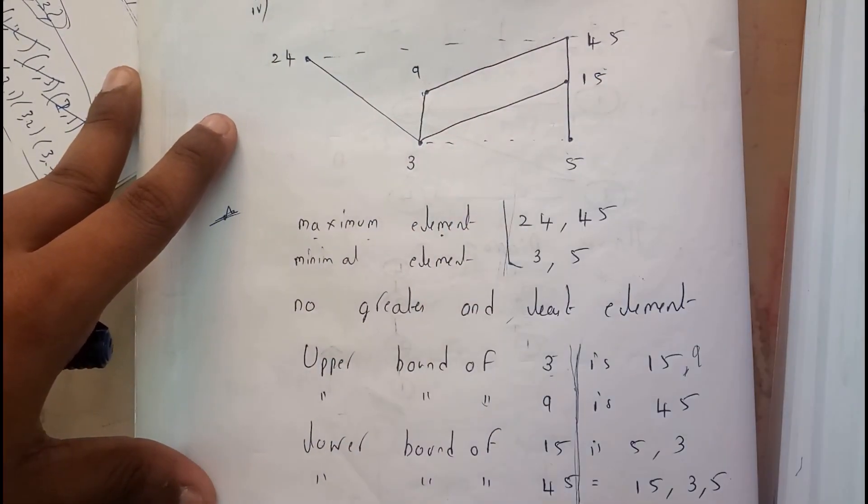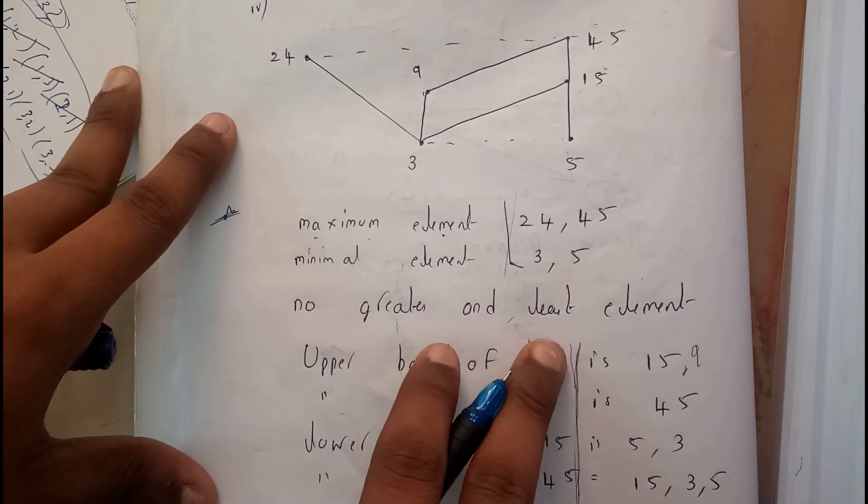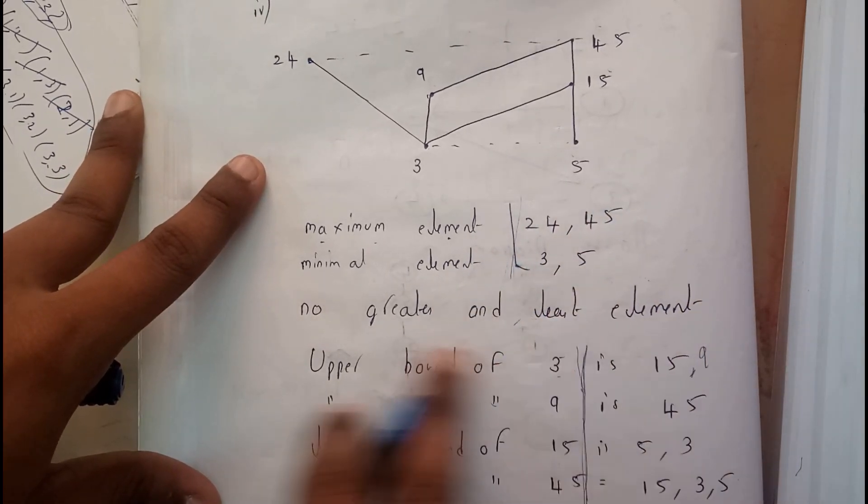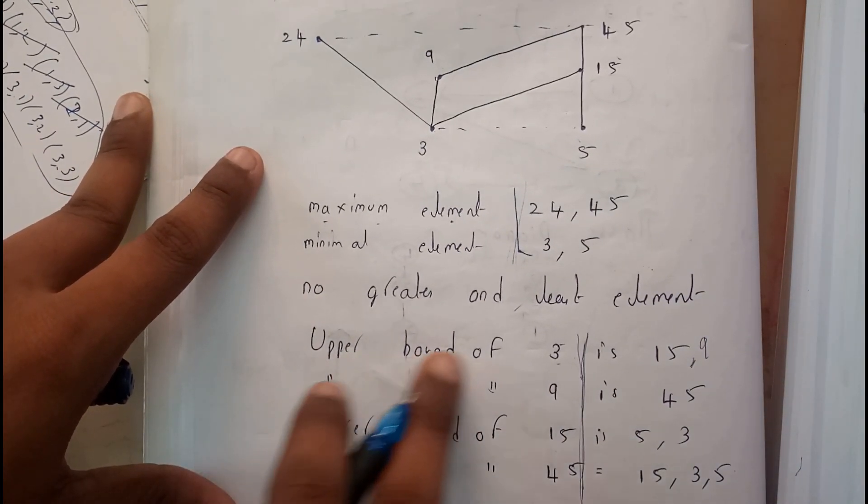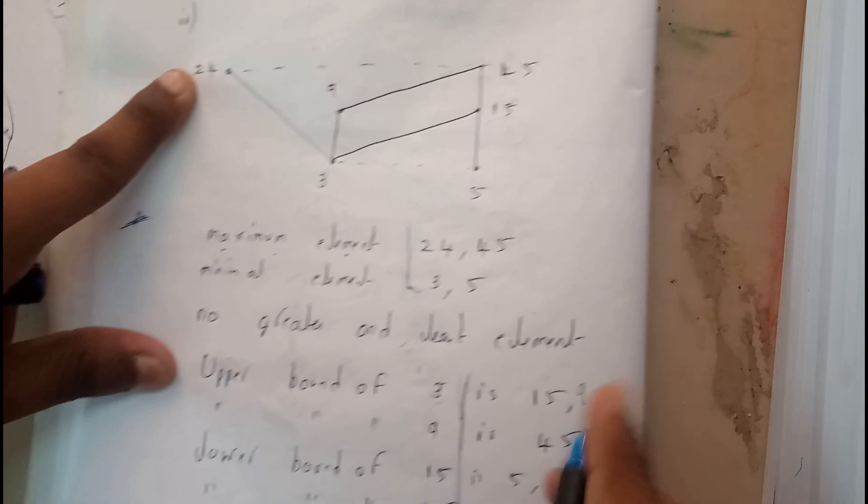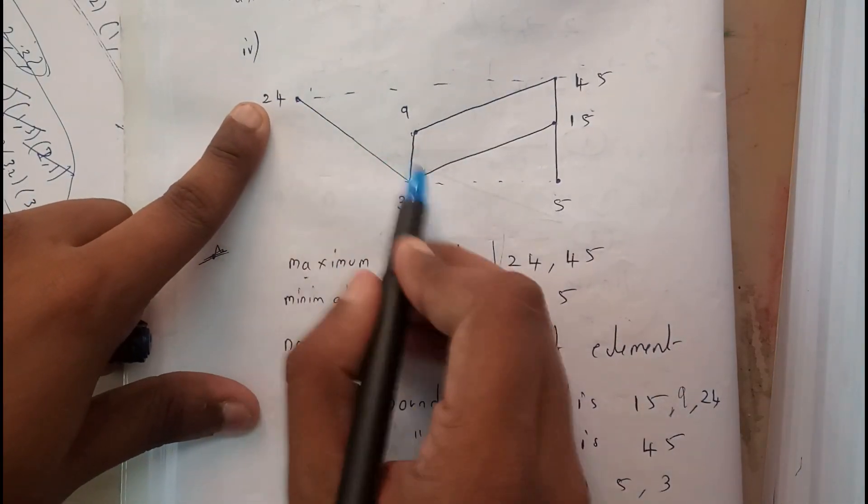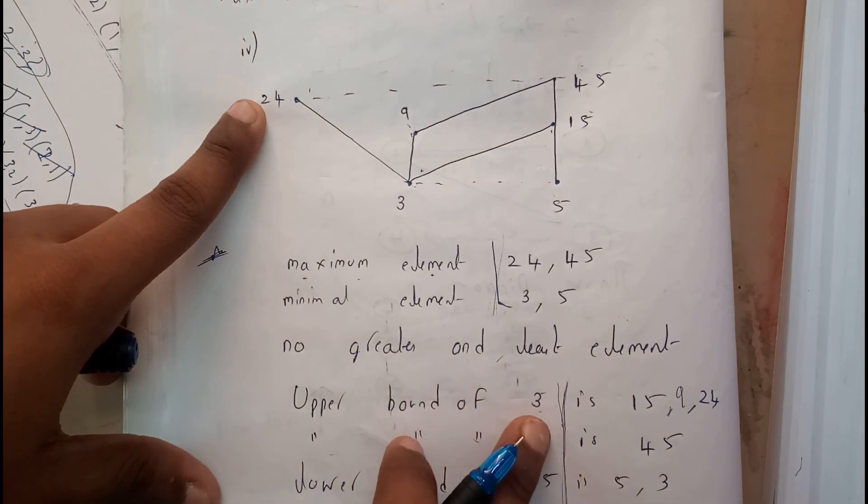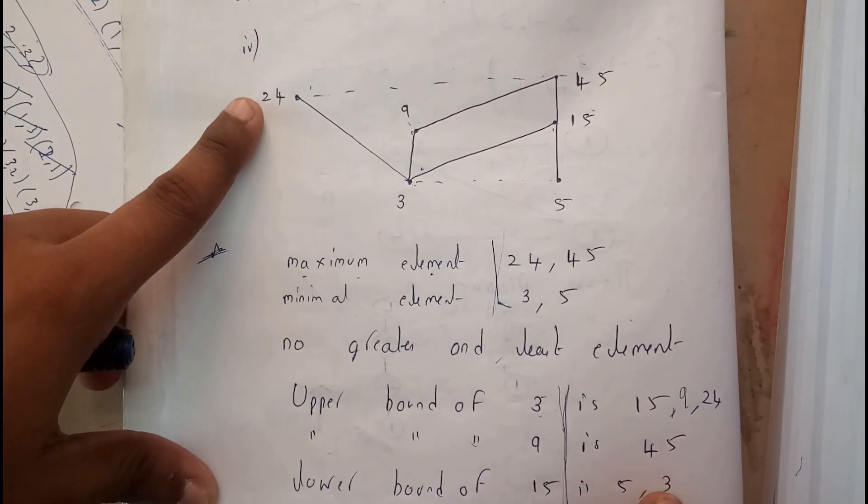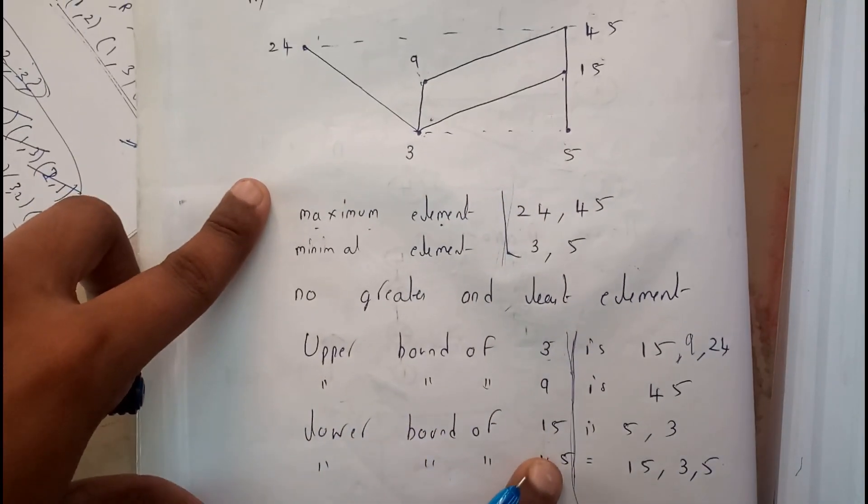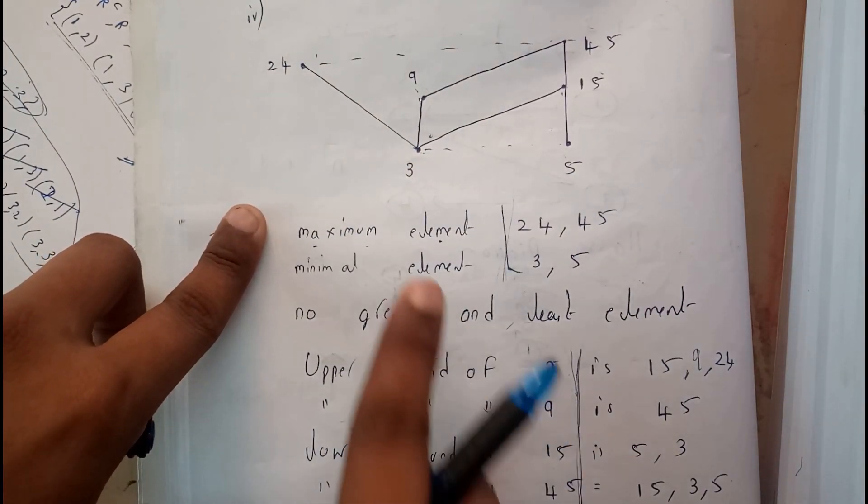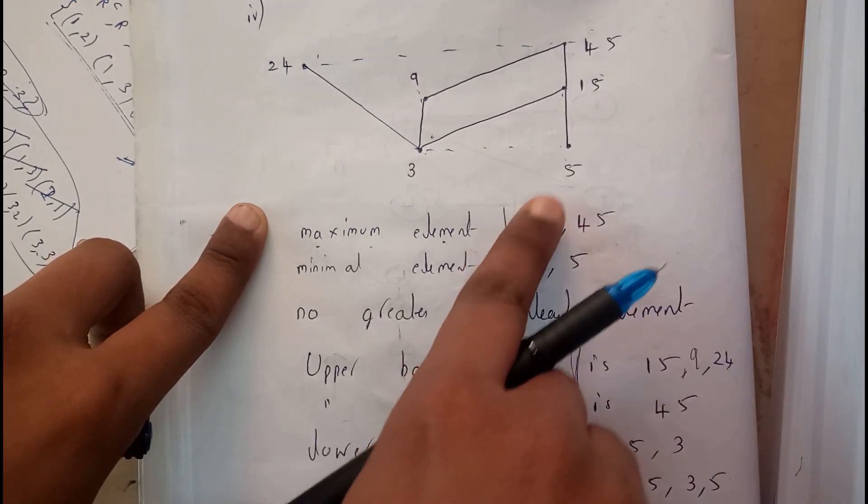Are you able to find the exact greatest value or the least value in the list? No. We are unable to find. We are getting 2 values, and those may or may not be the maximum value. So we cannot find the greatest or least value. So he is asking upper bound of 3. For 3, he is asking upper bound. There are 3 possibilities: 24, 9 and 15. Further continuing, upper bound of 9: there is only a single possibility that 45. Next, lower bound of 15: 5, 3. There are 2 possibilities. Next, lower bound of 45. 45 is right here. Lower bound: 15, 5 and 9. I hope you understood about Poset and Hasse diagram.